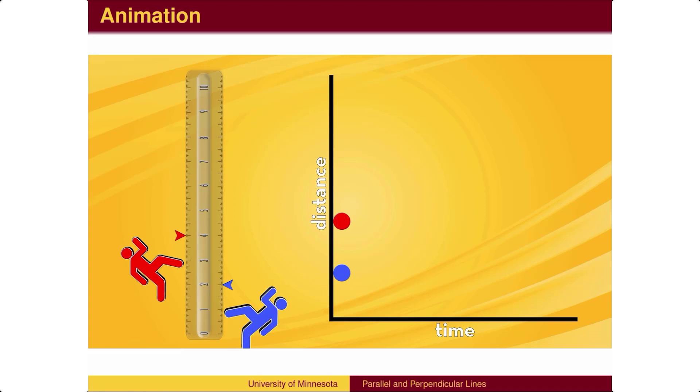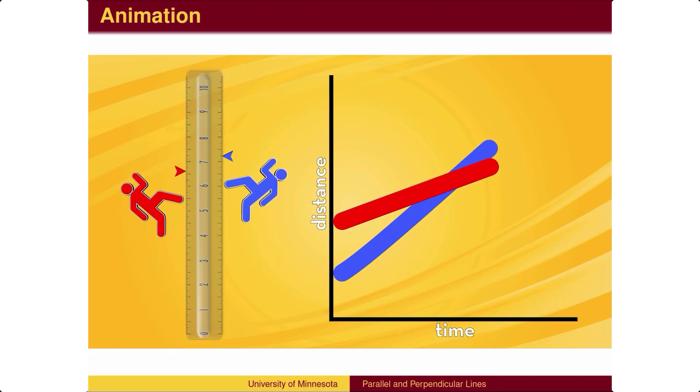The red competitor starts with a lead of 2 meters. If the slope, or speed, of the lower line is greater than 1 half, that is if the blue competitor runs faster than the red competitor, the blue competitor will catch up. This is equivalent to the lines intersecting.